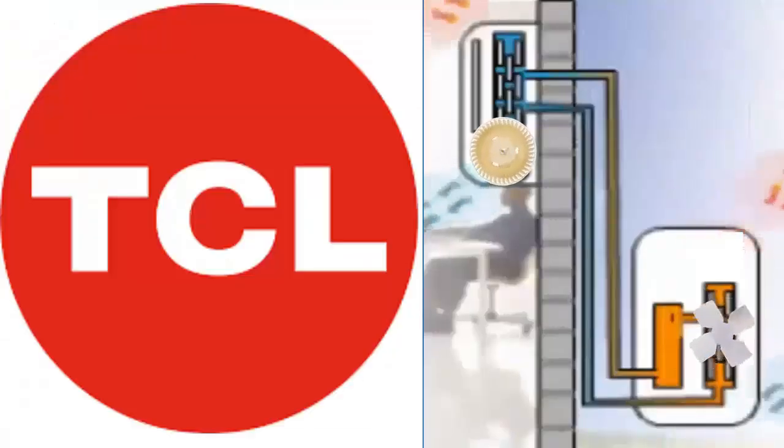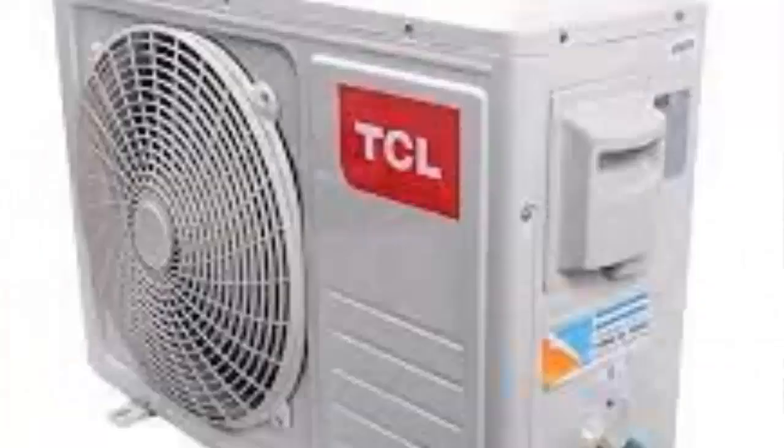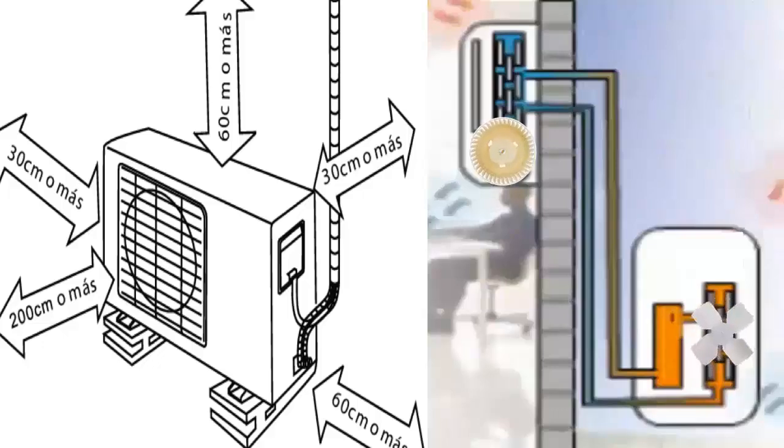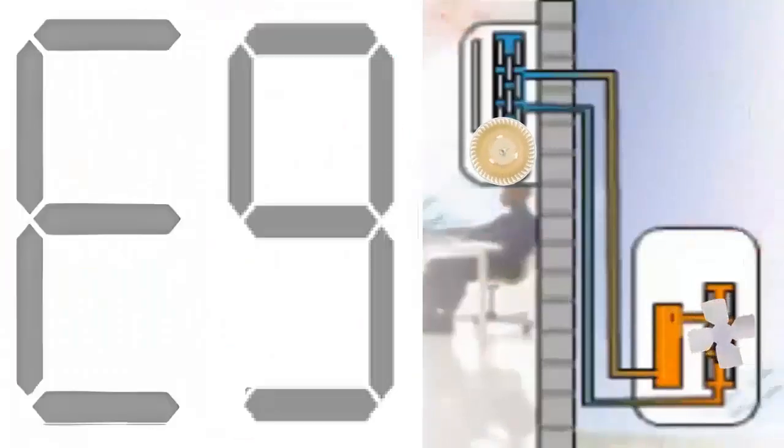Step 4: Additionally, perform a visual inspection of the outdoor unit. Check for cleanliness, proper airflow, and correct fan operation. If the problem is poor heat exchange in the outdoor unit, the E9 error code may take a few minutes to manifest and often does not trigger immediately.